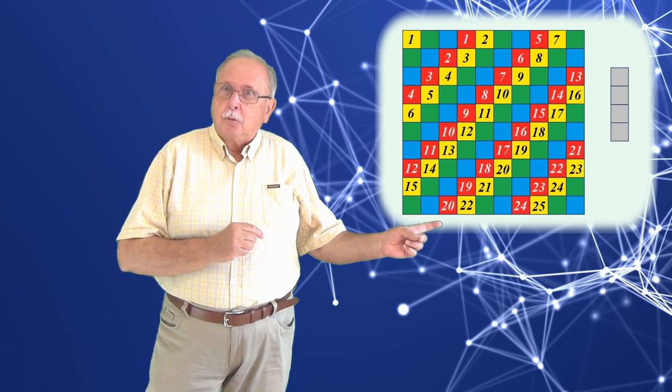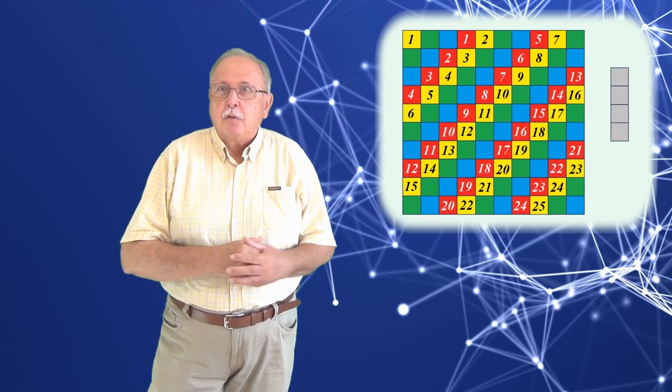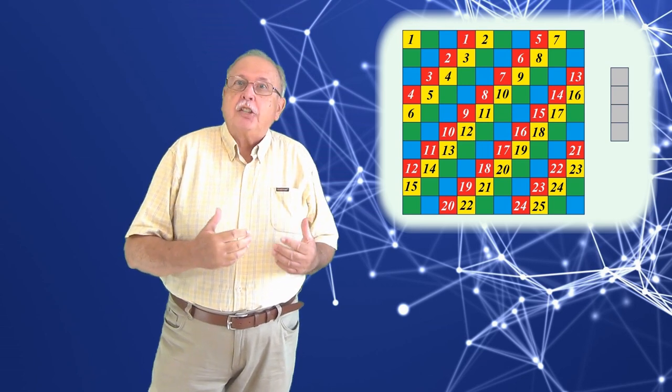În schimb, pătratele roșii sunt numai 24, în timp ce, dacă le veți număra, veți vedea că cele verzi sunt 26.